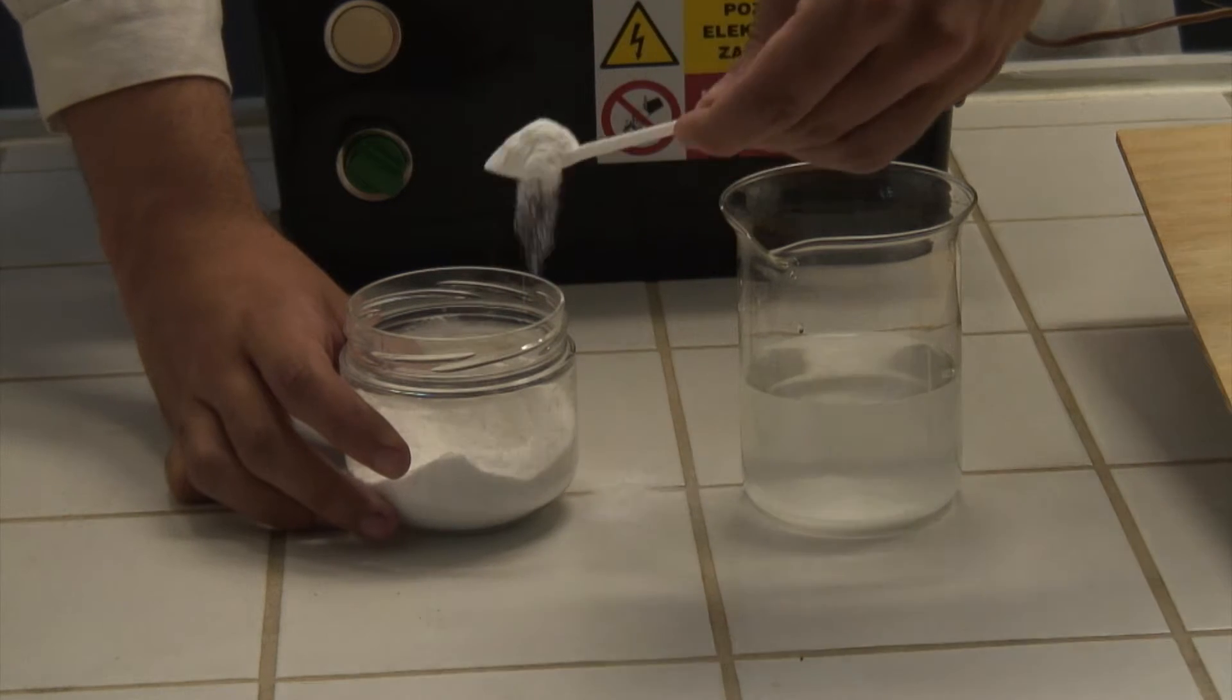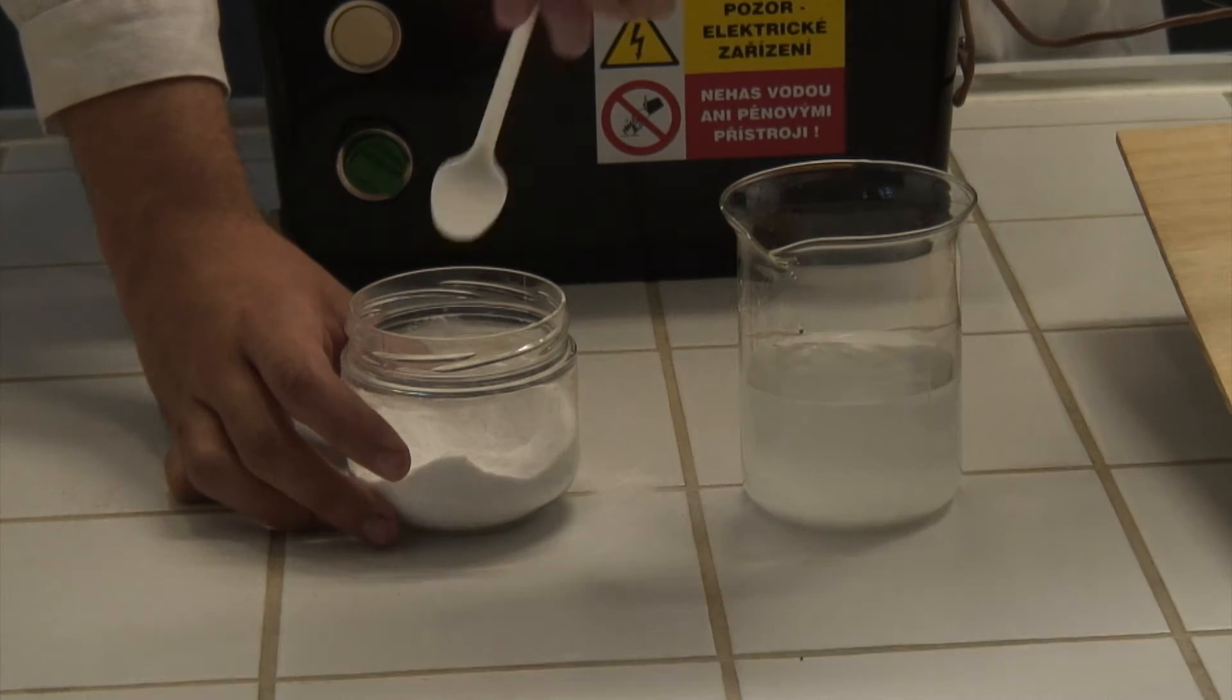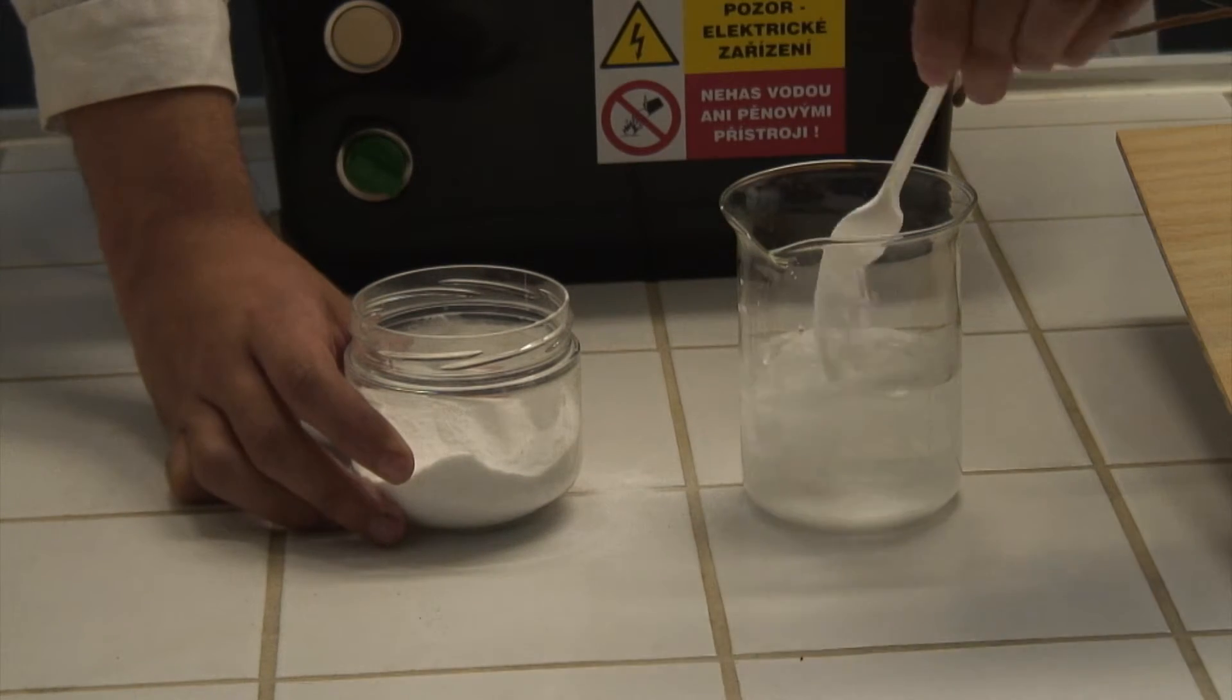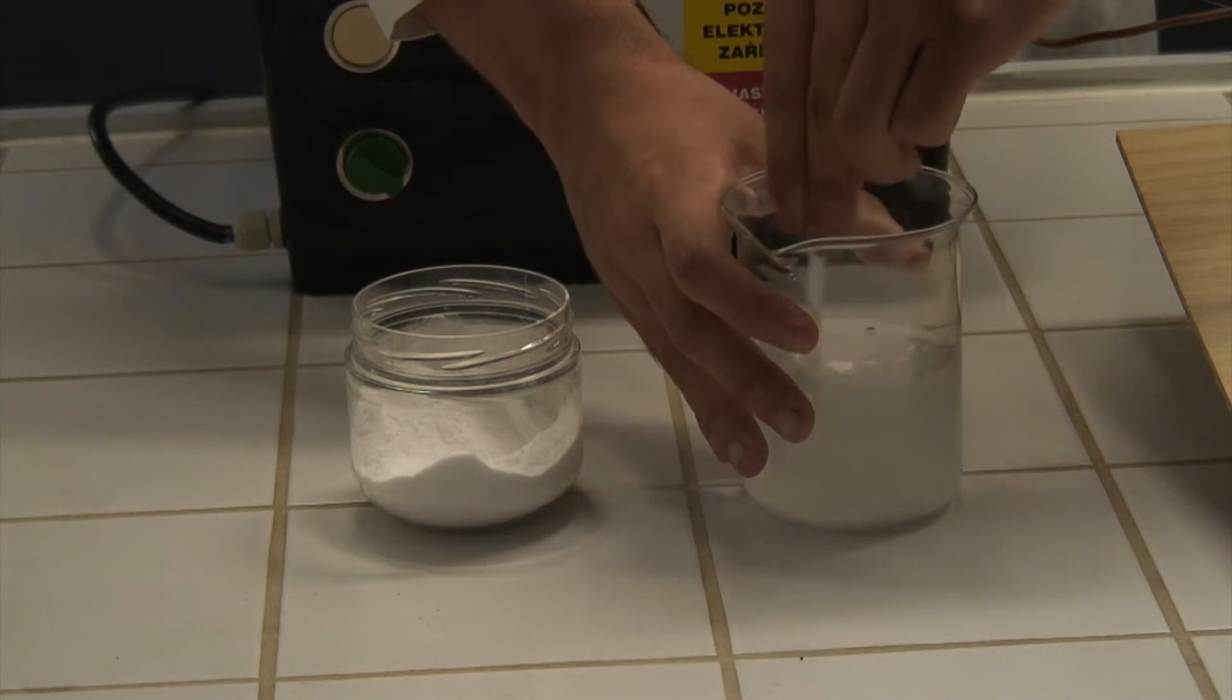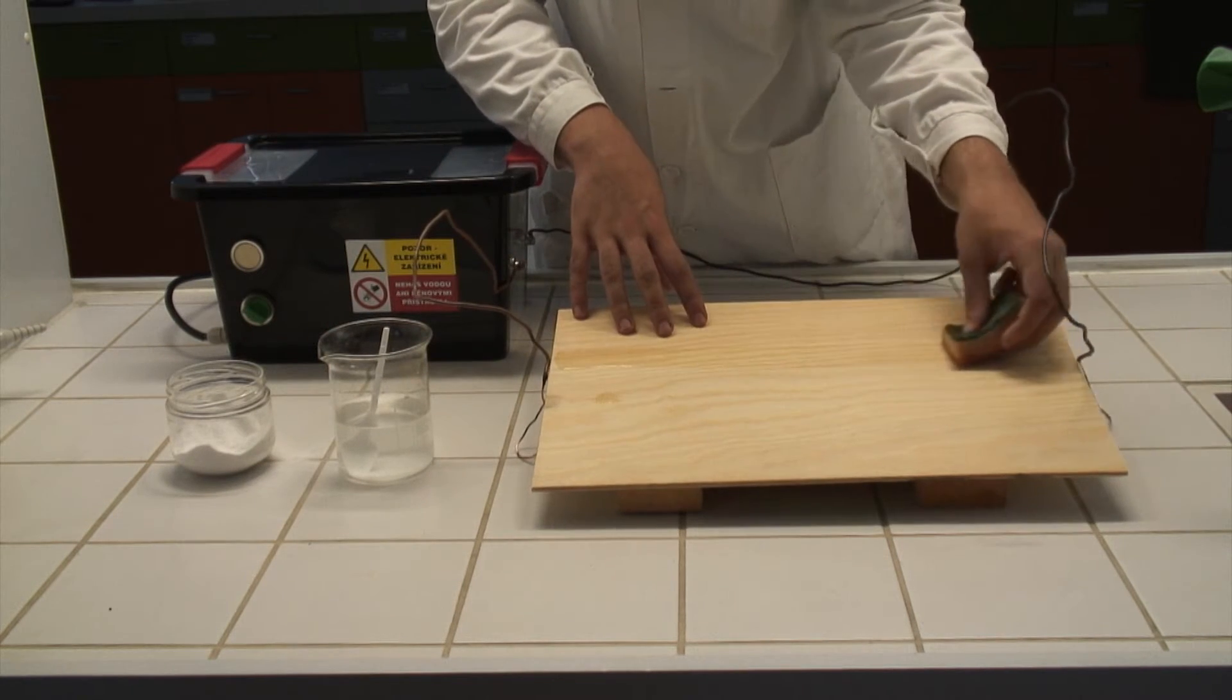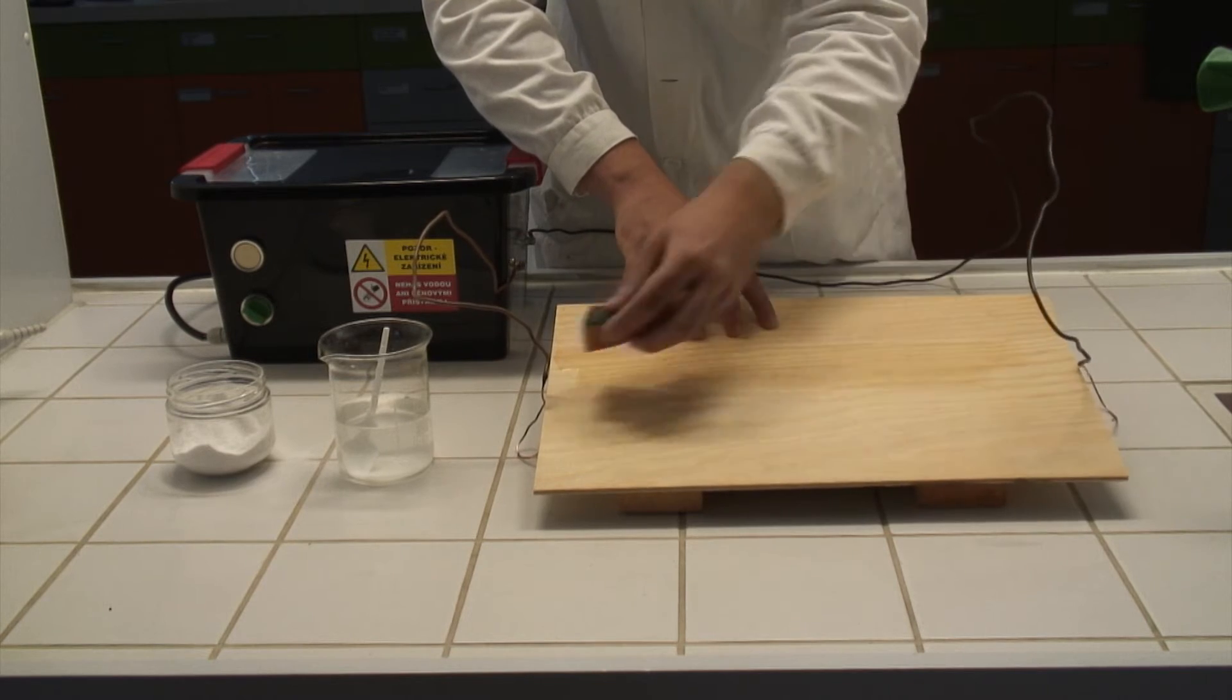After adding several teaspoons of baking soda to the water to increase its conductivity, we are almost ready to begin our experiment. Don't forget to stir! The last thing we have to do is moisturize the wooden board using the mixture we have just prepared.